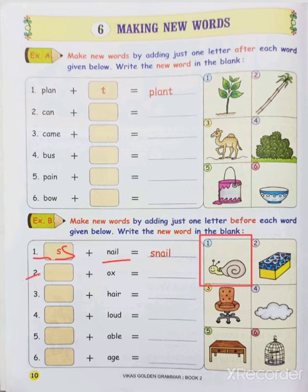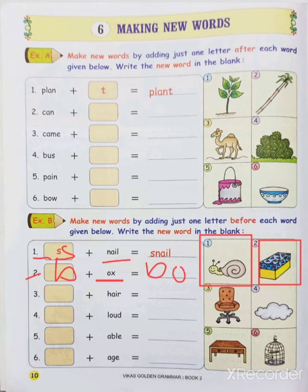Moving to the second one. You can see it — it's a box. What is the word given here? O, X — ox. Ox you know, it means a male cow. This is also a word. By adding B before the word, which word do we get? B, O, X — box.